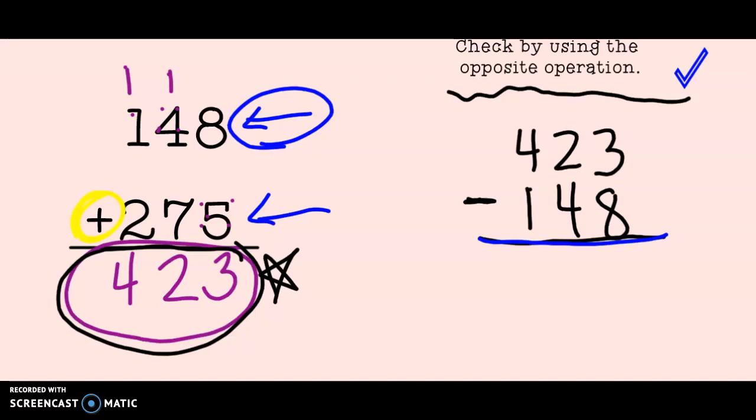3 minus 8. Can I do that? No, I can't. Let's go next door and ungroup from our neighbor. Now I have 13 minus 8: 13, 12, 11, 10, 9, 8, 7, 6, 5. That's a good one. Now in the tens, I have 1 minus 4. I can't do that either, can I? So let's ungroup our hundred and give ourselves 10 more tens. That's 11 tens: 11, 10, 9, 8, 7. And last, I have 3 minus 1, which is 2. 275.